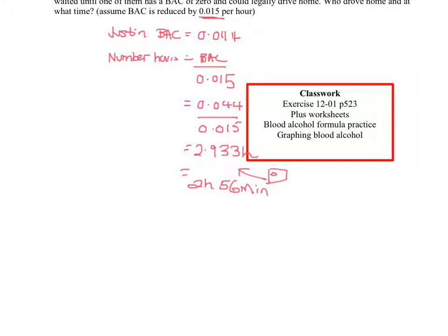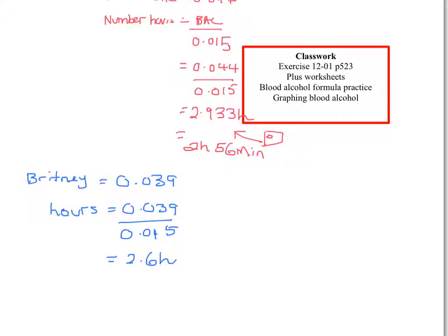Let's see what it is for Brittany. Her BAC was 0.039. For the number of hours for her, we place that into the same formula: 0.039 over 0.015. Our calculator gives us 2.6 hours, which using your bubble key converts to 2 hours and 36 minutes. The question is who drove home? That's kind of obvious now - Brittany must have driven home.